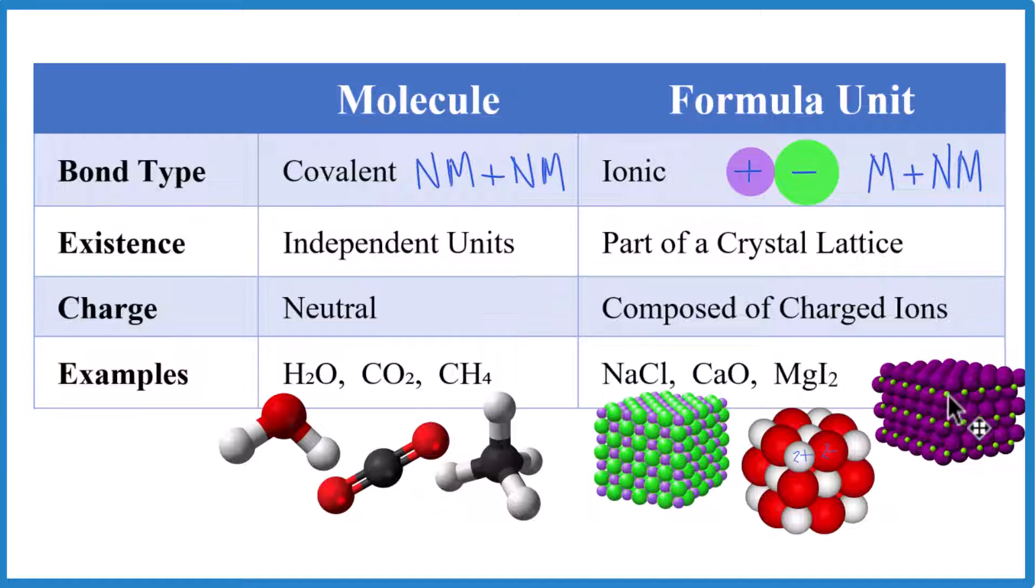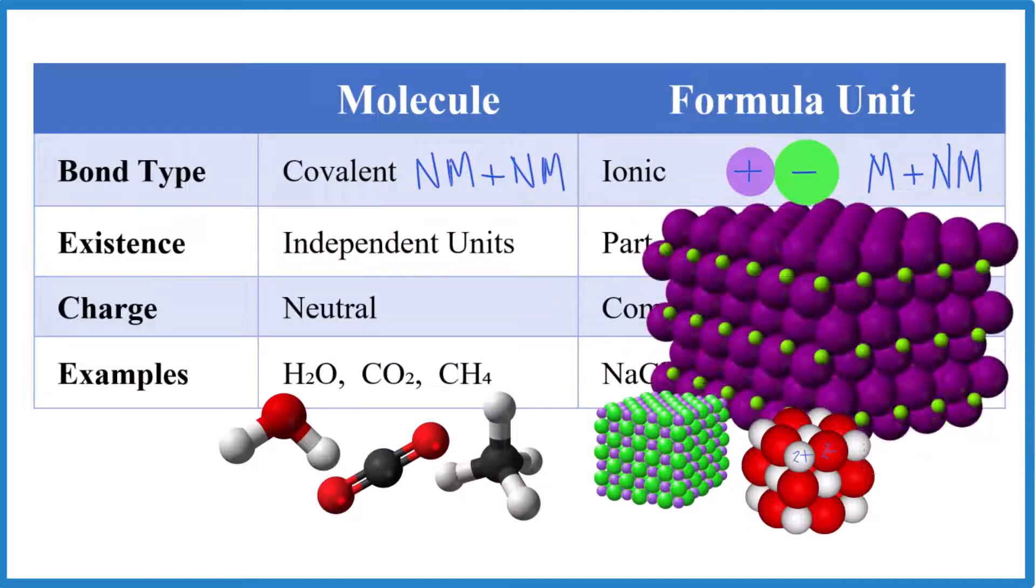For something like magnesium iodide down here, since it's MgI2, we have one magnesium, the small one here, for every two of these iodide ions here, the big ones. But the ratio, it's fixed. It doesn't change.